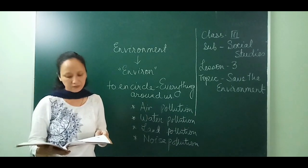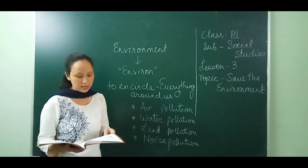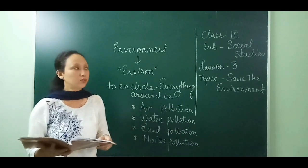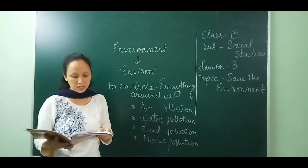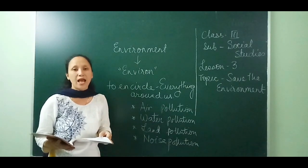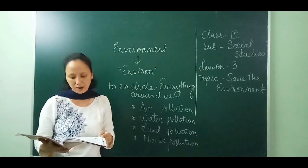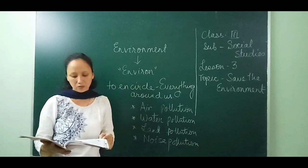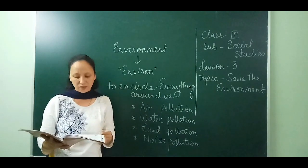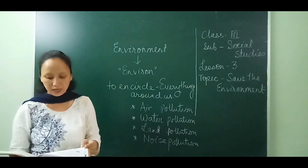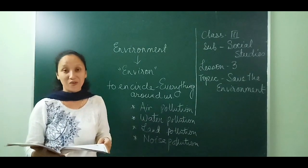Exercise F — activity: make a list of two things which you can reduce, reuse, and recycle. To save the environment, remember these three Rs: reduce, reuse, and recycle. Last, read the sentences — if your answer is yes, color the stars. For example, 'I turn off the tap while brushing my teeth' — if you really do it, color a star. You can use any color: blue, yellow, or red. Complete this assignment.